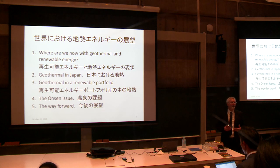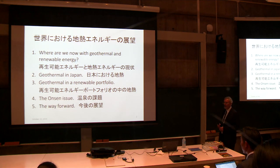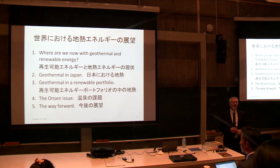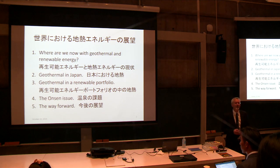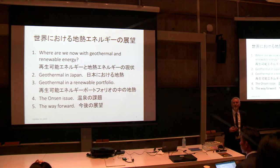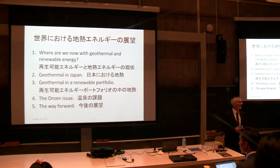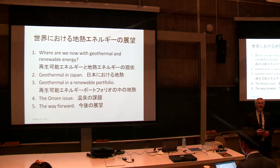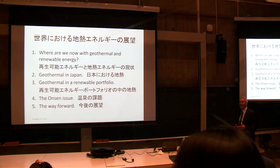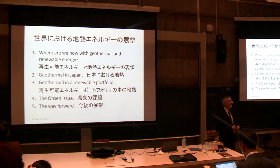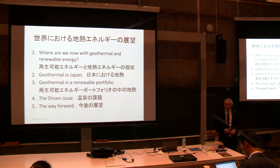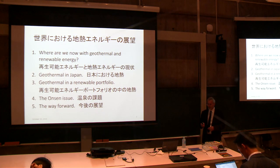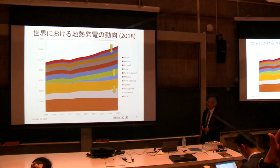We'll talk about how we can integrate geothermal energy into other renewable sources. And in particular in Japan, there is a unique situation — a kind of collision between geothermal electricity production and the onsen industry. That is characteristic of Japan and not seen in other countries. I'll finish by talking about some ideas for the future in Japan and in the world.